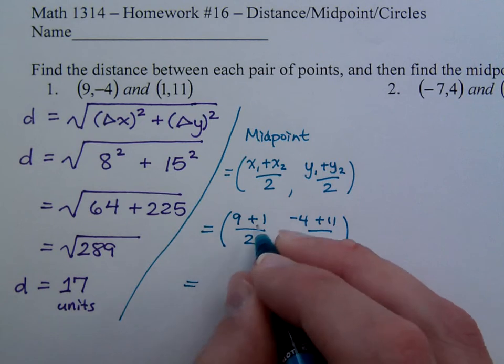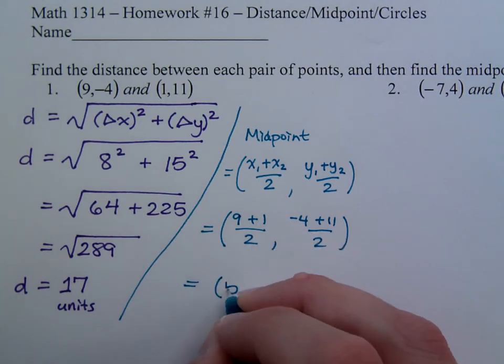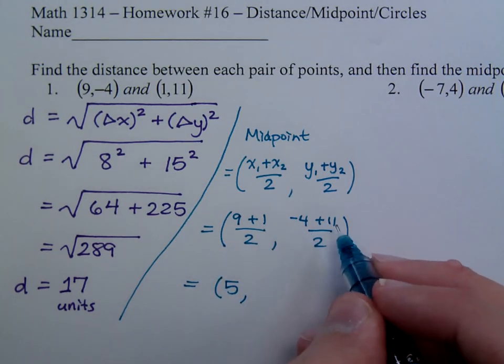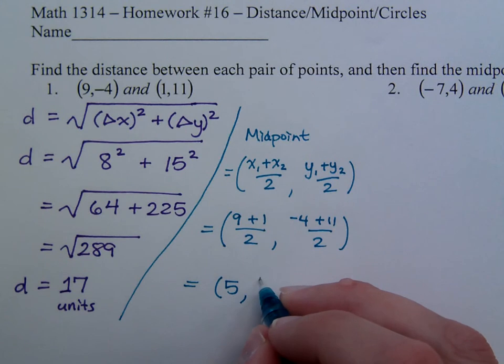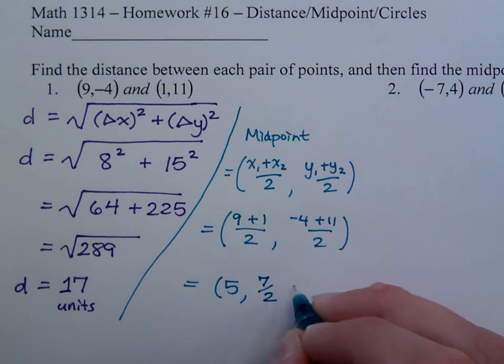So doing the math here, it gives me 10 over 2, which is just 5. Negative 4 plus 11 is 7 over 2, so we can just say this is 7 halves. If you want to say 3 and a half, you can. It's the same thing.